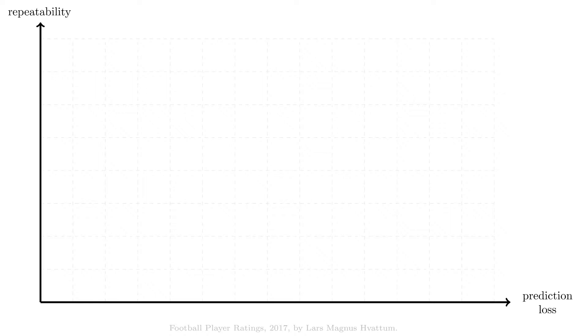The repeatability measure should be between 0 and 1, with higher values being better. The prediction measure will tend to be in the indicated range, with lower values being better. To make rating systems easier to compare, we have flipped the first axis around with smaller values, and therefore better values, to the right. This means that better rating systems should provide values further away from the origin, and towards the green region of the figure.